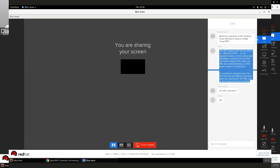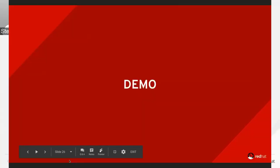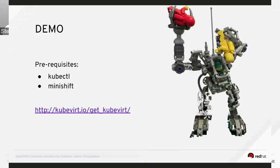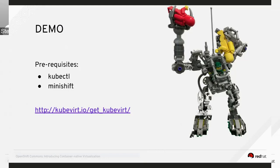In terms of resources and how you can try this out: if you go to kubevirt.io on the landing page, you'll get a link, but you can also go to the /get_kubevirt page. There are instructions there for showing you how to quickly run this on MiniShift, MiniKube, or cluster-up — basically anything you can get your hands on fairly easily.